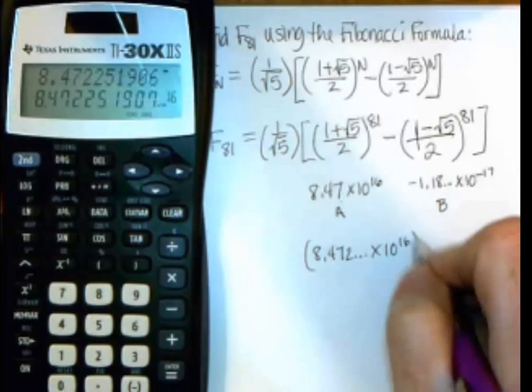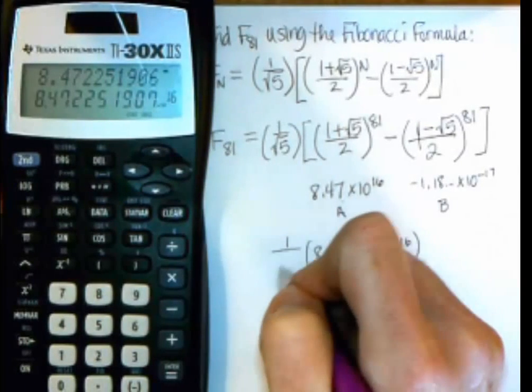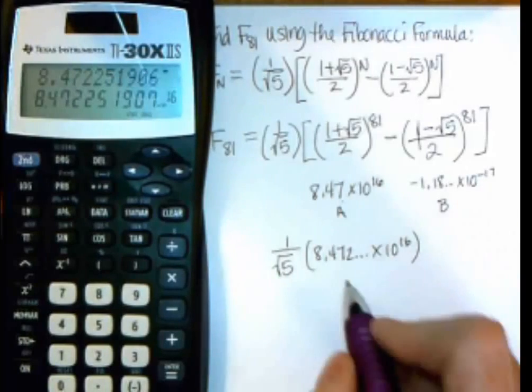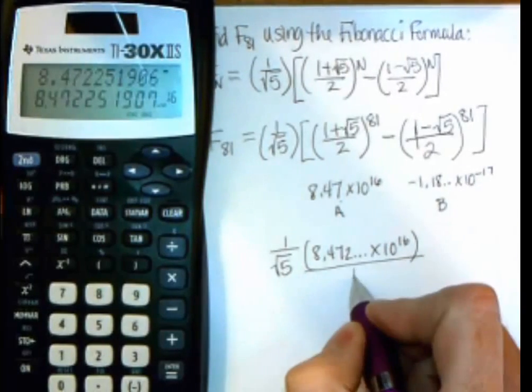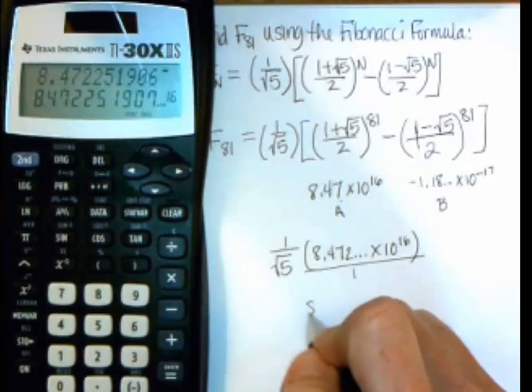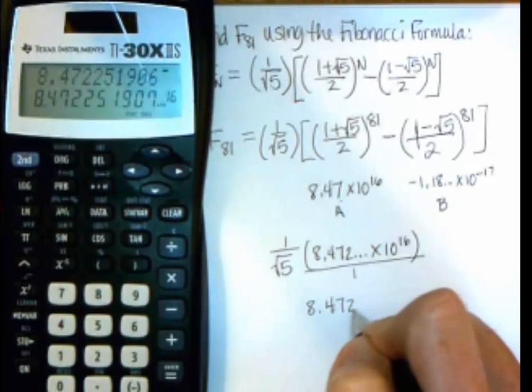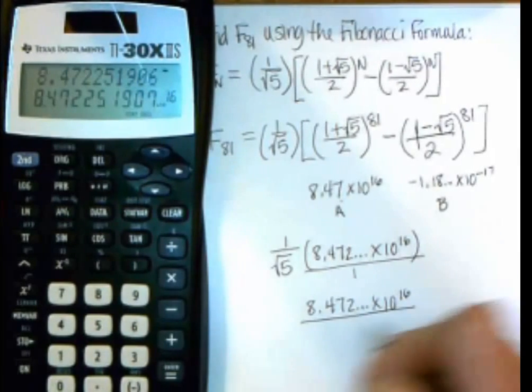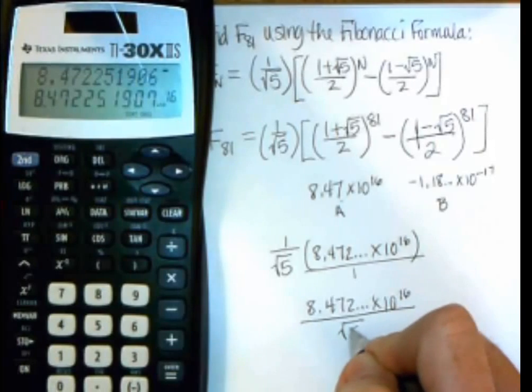And it came to 8.472 and goes on times 10 to the 16th. I'm almost done, but I still have to multiply by 1 over square root of 5. And multiplying by 1 over the square root of 5, I can think of this as being over 1. But it just is going to be the 8.472 times 10 to the 16th, which I'm leaving sitting on my calculator.